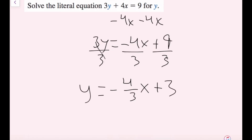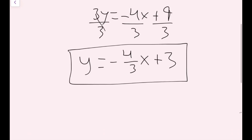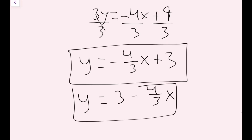So this is one possible answer. The other way you could have had this is the terms rearranged: y equals 3 minus 4 thirds x. This would also be a correct answer here. That is how to solve for y in terms of x.